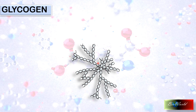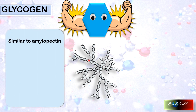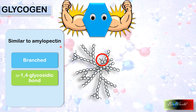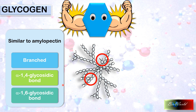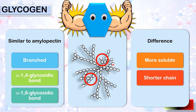The next polysaccharide is glycogen — found in the muscle and liver tissues of humans and animals. Glycogen has a lot of similarities to amylopectin: it is branched, and has the same two bonds — the linear parts are bonded by alpha-1,4 glycosidic bonds and the branched parts have alpha-1,6 glycosidic bonds. But there are differences too: glycogen is more soluble than amylopectin. The reason is that glycogen is shorter than amylopectin, and on top of that glycogen has more branches compared to amylopectin.